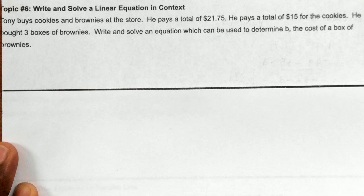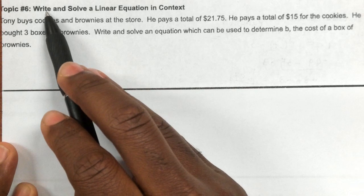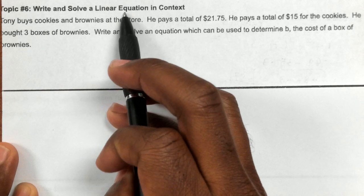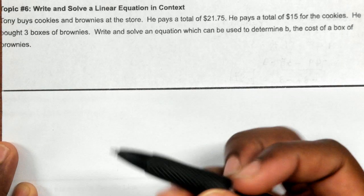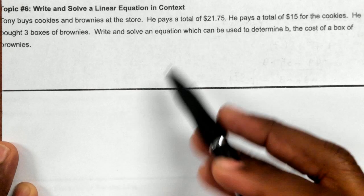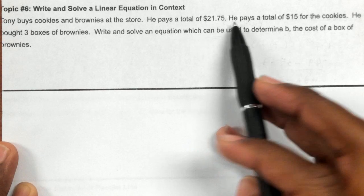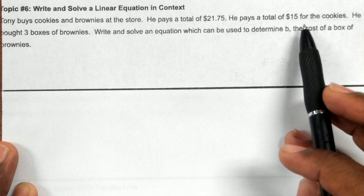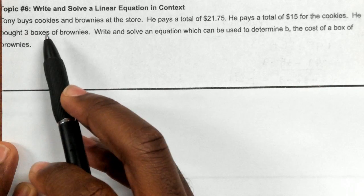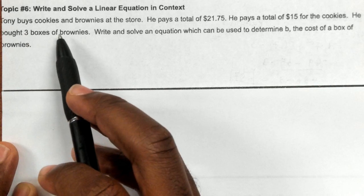Question number six wants us to write and solve a linear equation. Anytime you're trying to write an equation where you have some total and then you have some amount that's changing over some period of time, or in this case over some period of boxes, you need to think about this formula.